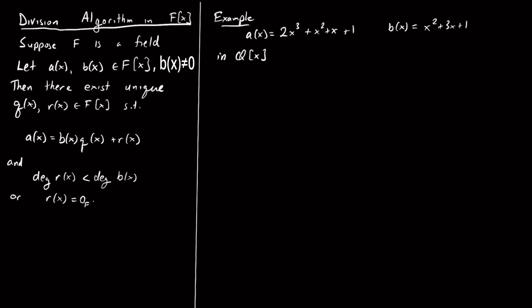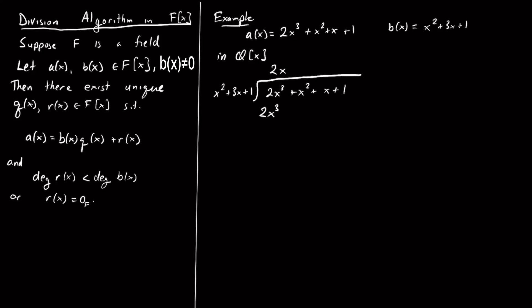So how do we do our long division? We'll do polynomial long division to find our quotient and remainder. I'll write a(x) = 2x³ + x² + x + 1 inside, and b(x) = x² + 3x + 1 to the left. I look at the leading term 2x³, and I ask: how do I get from x² to 2x³? I multiply by 2x. So 2x times the whole polynomial gives 2x³ + 6x² + 2x.